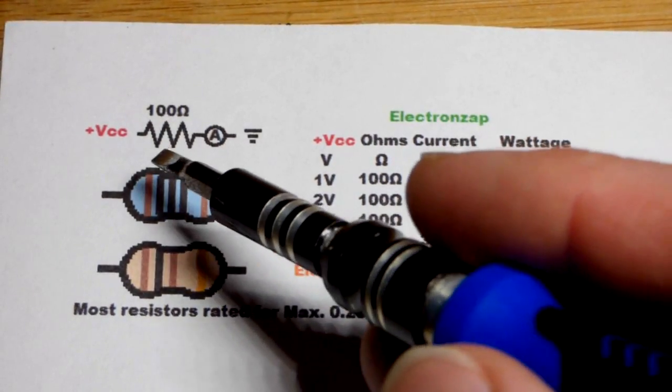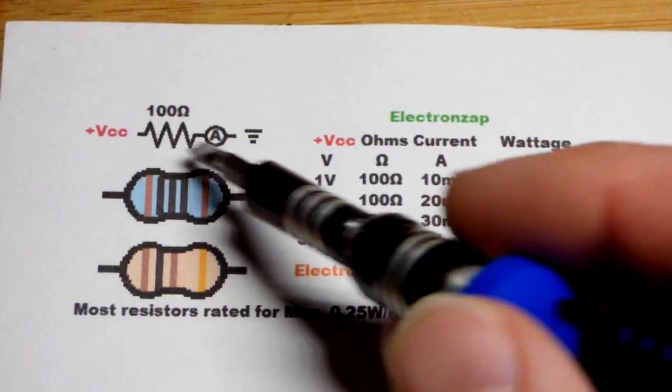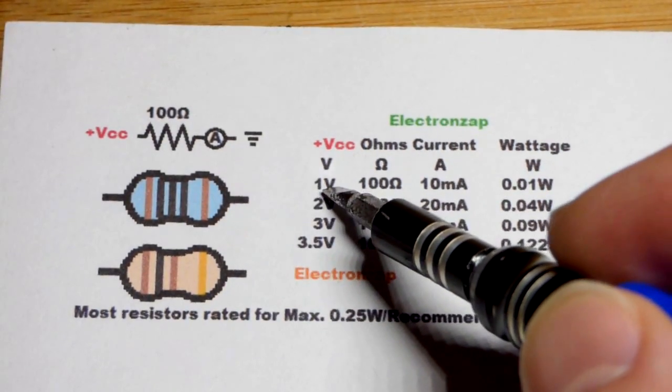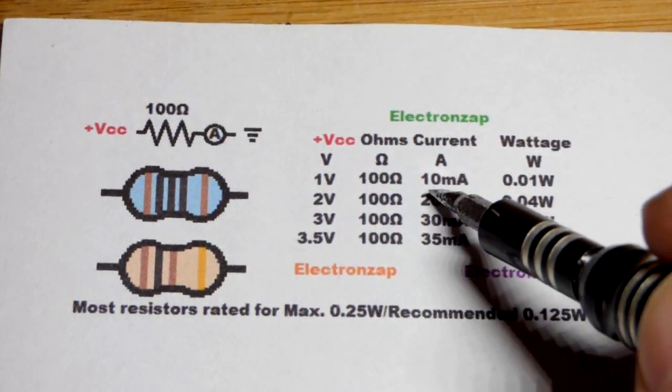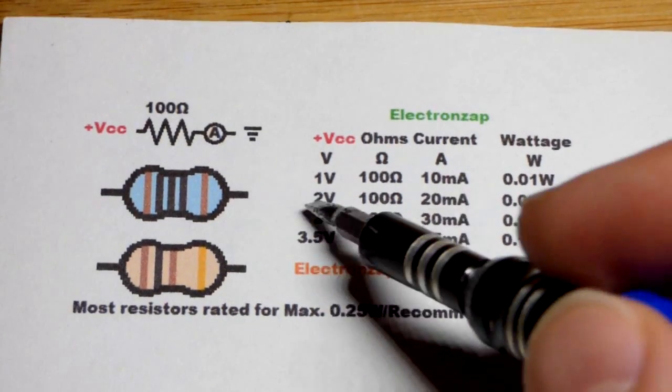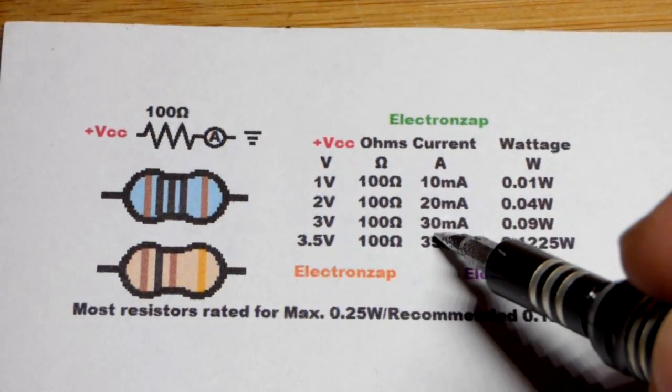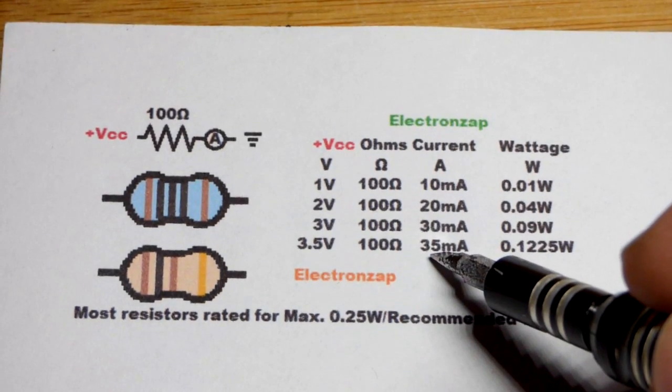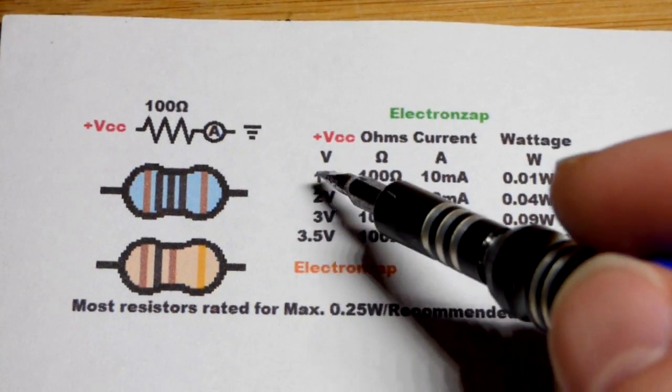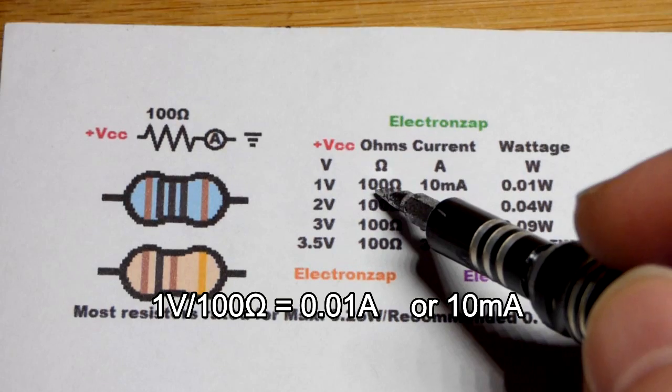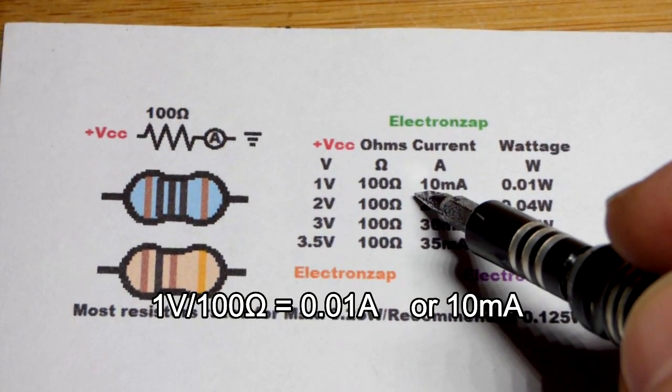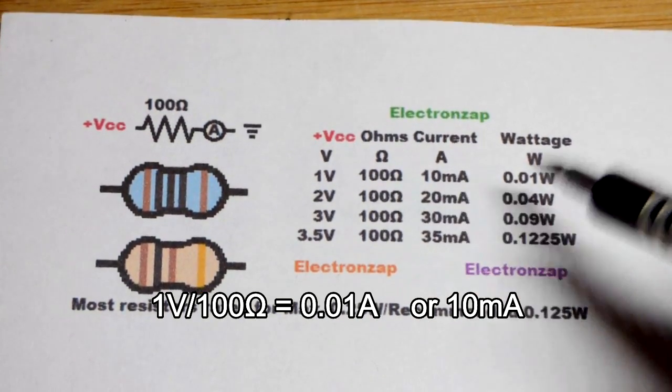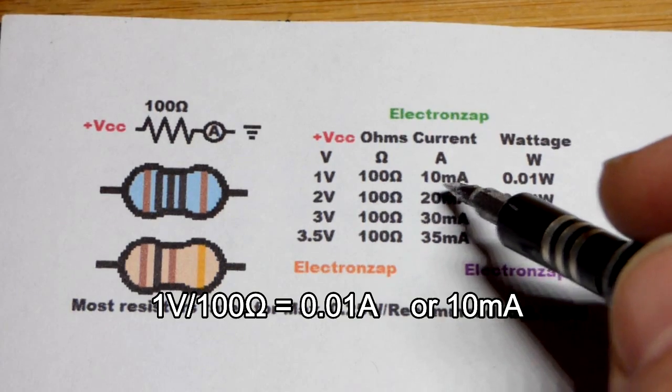We have the basic property: for each volt across it you get 10 milliamps of current through it. So 2 volts gives 20 milliamps, 3 volts gives 30 milliamps, pretty straightforward. 3.5 volts gives 35 milliamps. That's 1 divided by 100 equals 0.01 amps, which we converted to milliamps.